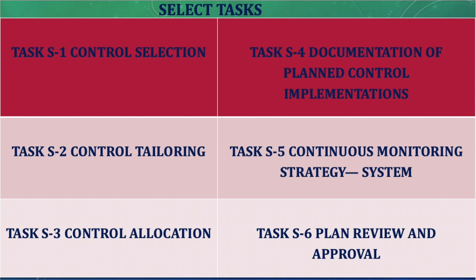Task 1 means you select the recommended security controls based on the categorization of your system. Task 2, control tailoring, means tailor the controls to fit your organization, your environment, and your system. Not all the controls that were selected will be implemented, so there is a need to tailor — meaning remove any controls that do not fit your internal environment and the system.